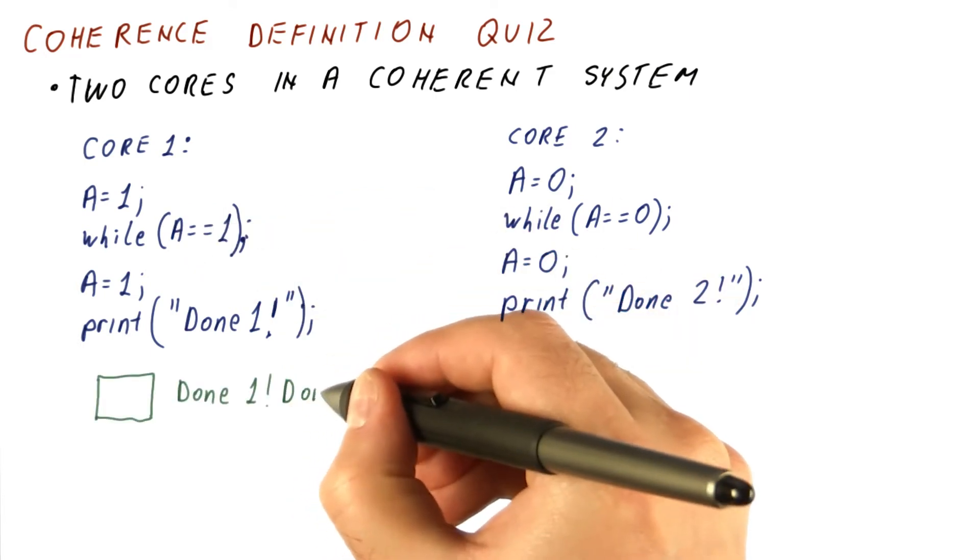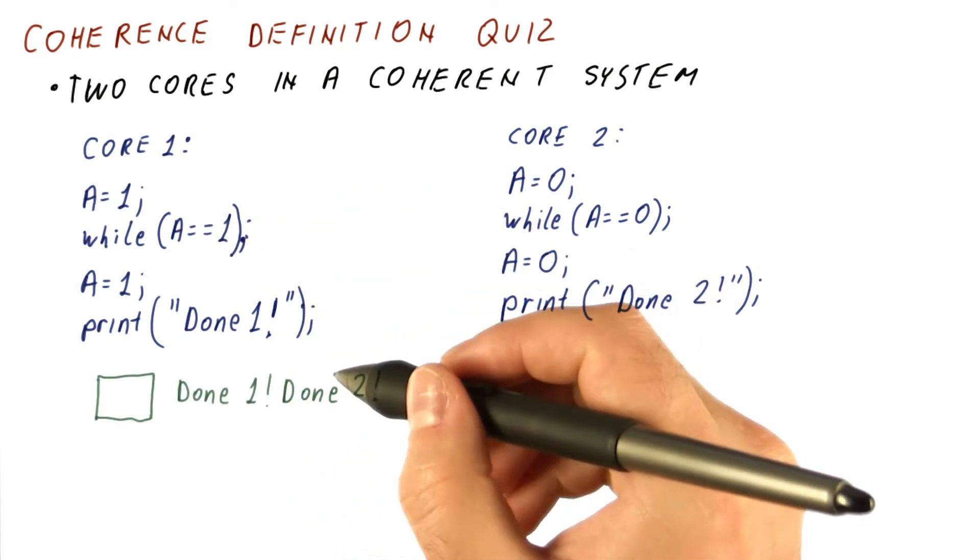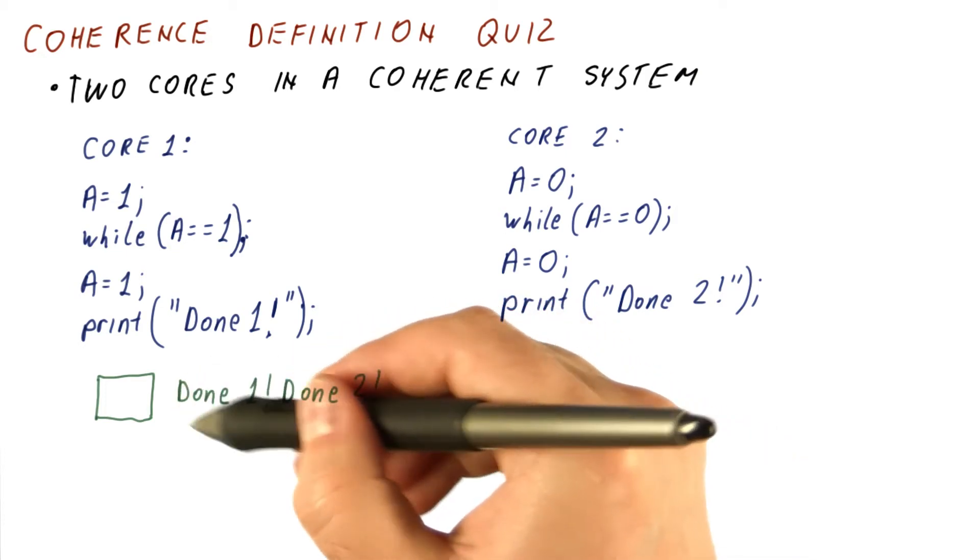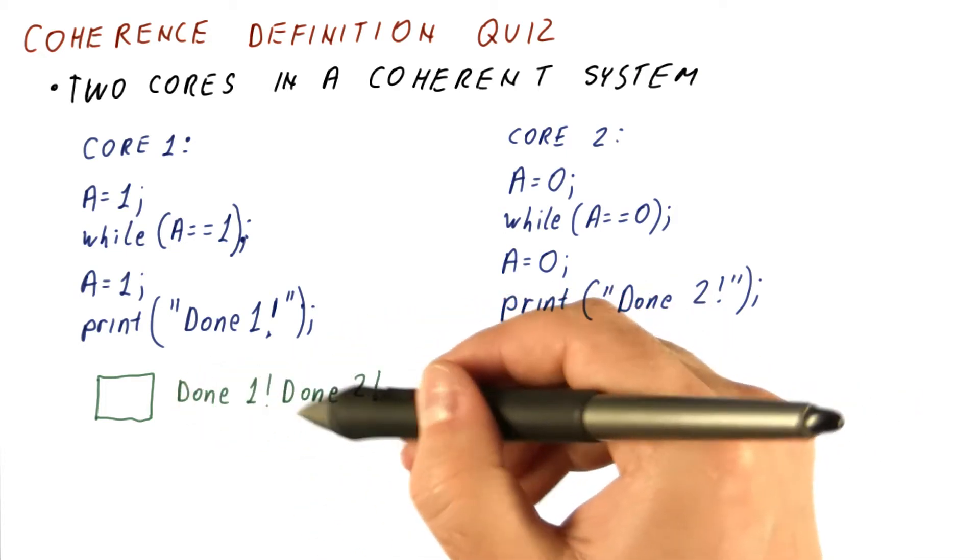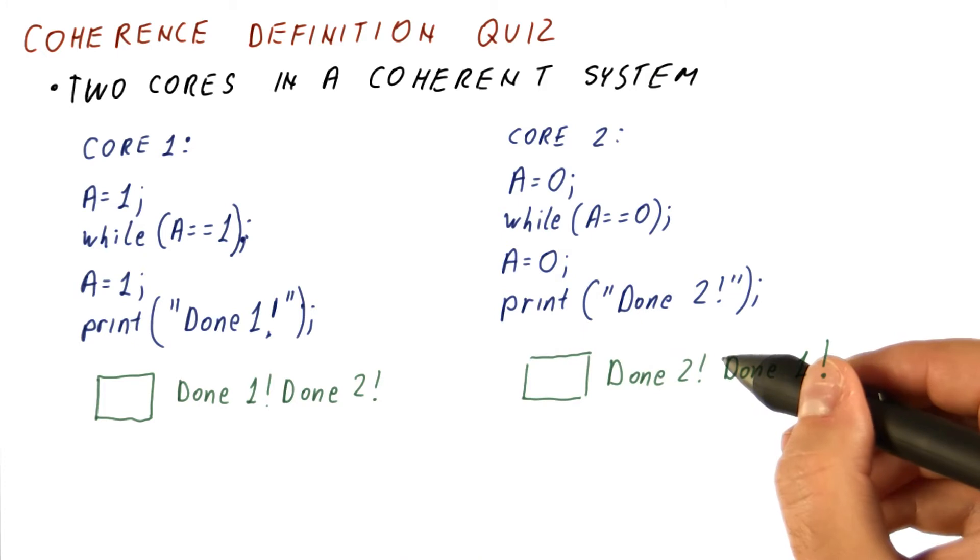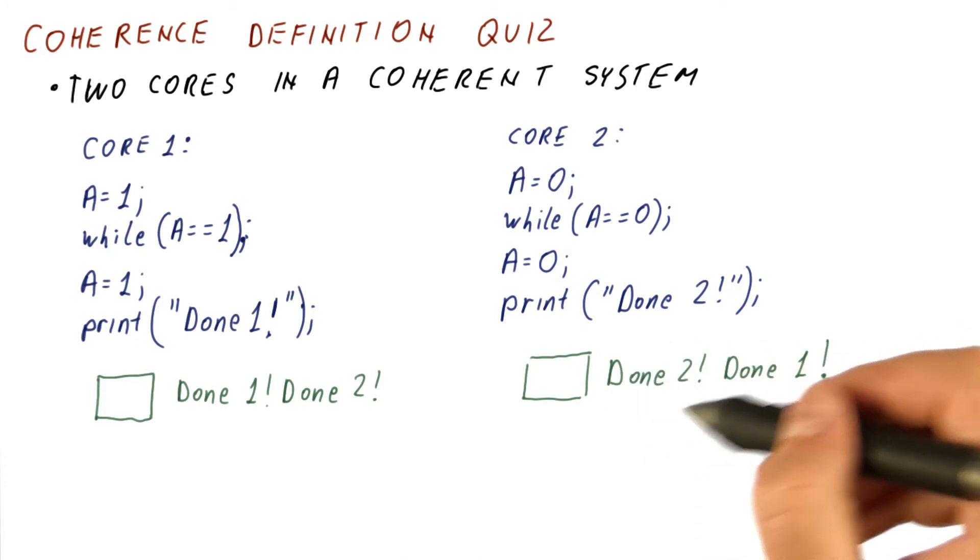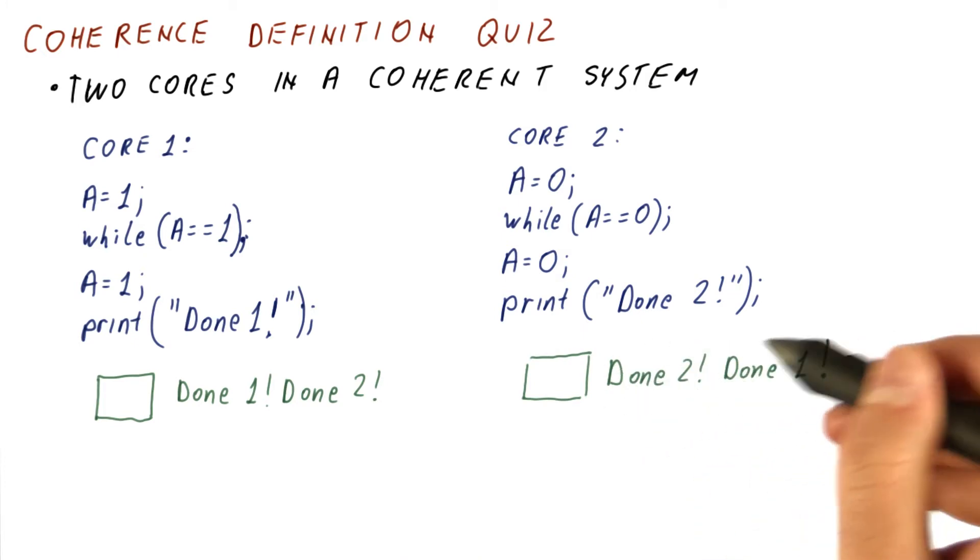The question for you is which of the following printouts are possible? First, core one prints done one, then core two prints done two. The next possibility, first core two prints done two, then core one prints done one.